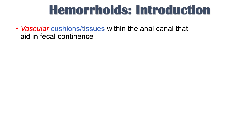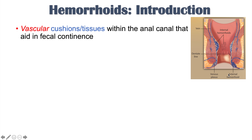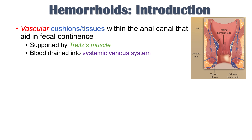What are hemorrhoids? Hemorrhoids are vascular cushions or tissues within the anal canal that aid in fecal continence. Here is a diagram showing both internal hemorrhoids, which are above the dentate line, and external hemorrhoids, which are below the dentate line. The trites muscle supports these hemorrhoids, and because they're vascular cushions, they are filled with blood and drain through veins into the systemic venous system. This will become important in understanding why certain risk factors can lead to hemorrhoidal disease.